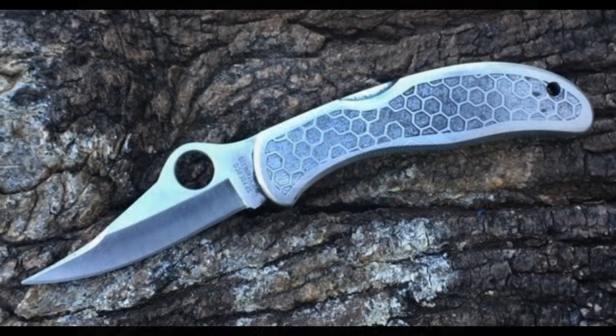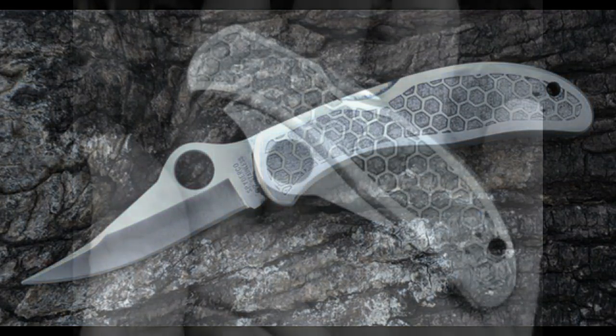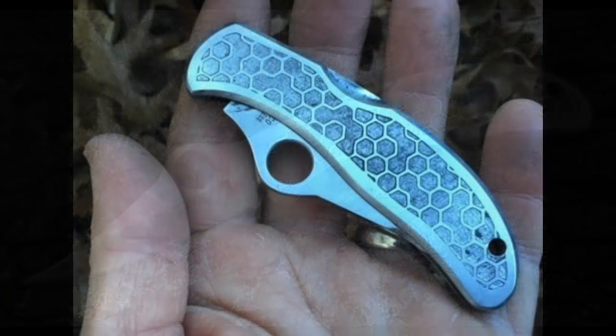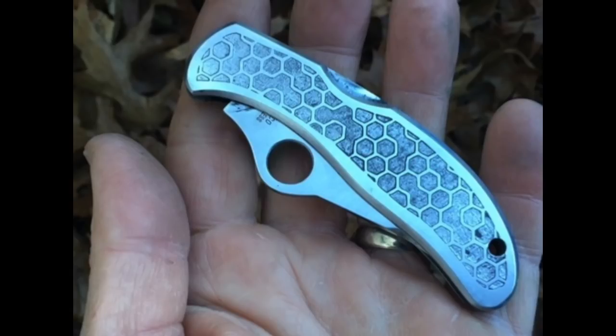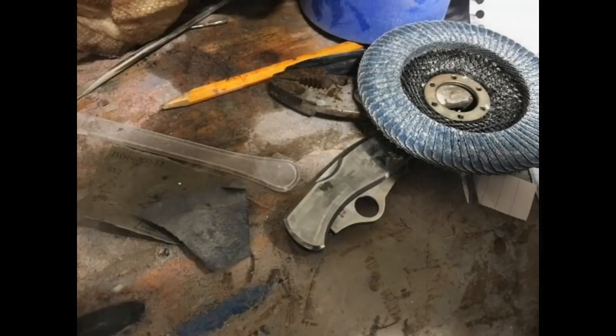So this is the finished product. This is an old Spyderco stainless steel knife. This blade is probably 25 years old. I've cleaned it up a little bit and modified it by adding some very unique metal etching.